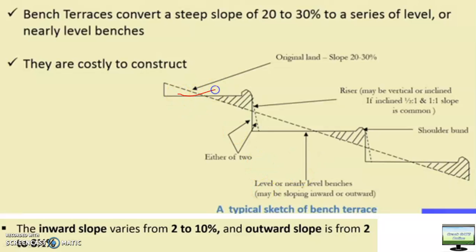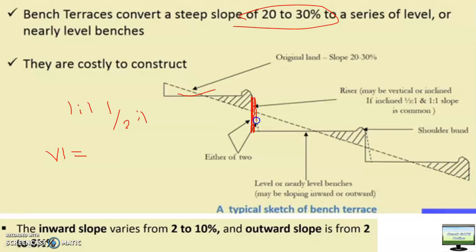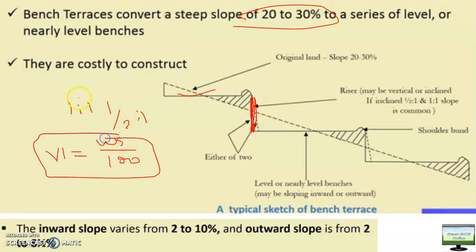Bench terraces apply to slopes of 20 to 30 percent as mentioned. I will discuss in upcoming videos what is 1:1 and half raised to 1 batter slope and how vertical interval changes. For a vertical cut with no batter slope, the vertical interval is W×S divided by 100. If W and S are not given, for vertical cut, the vertical interval becomes 2 times the depth of cut. I will discuss this in the next video.